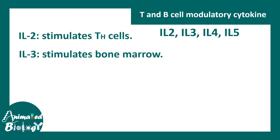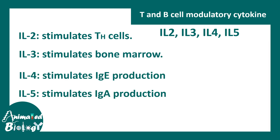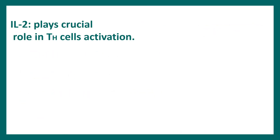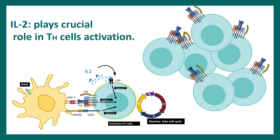IL-2 stimulates T helper cell production, IL-3 stimulates the bone marrow, IL-4 stimulates IgE production, and IL-5 stimulates IgA production. IL-2 plays a crucial role in T cell activation — the third signal for T cell activation comes from IL-2-mediated receptor activation. Naive T cells in a quiescent stage enter the cell cycle after this stimulation and then rapidly proliferate and expand clonally.